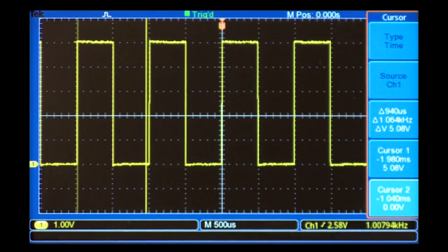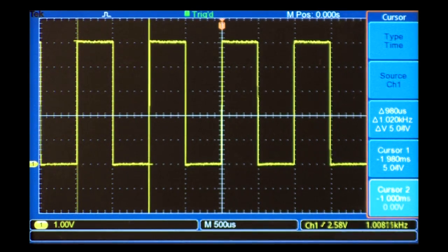The delta measurement shows time between the cursors. In this case, it represents the period of the signal. Also shown in the display is the frequency, which is the automatic calculation of 1 over the period.